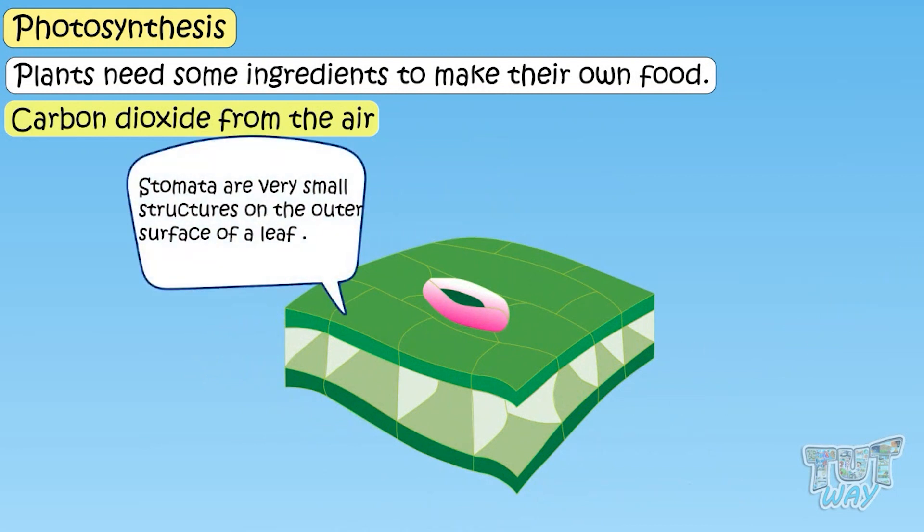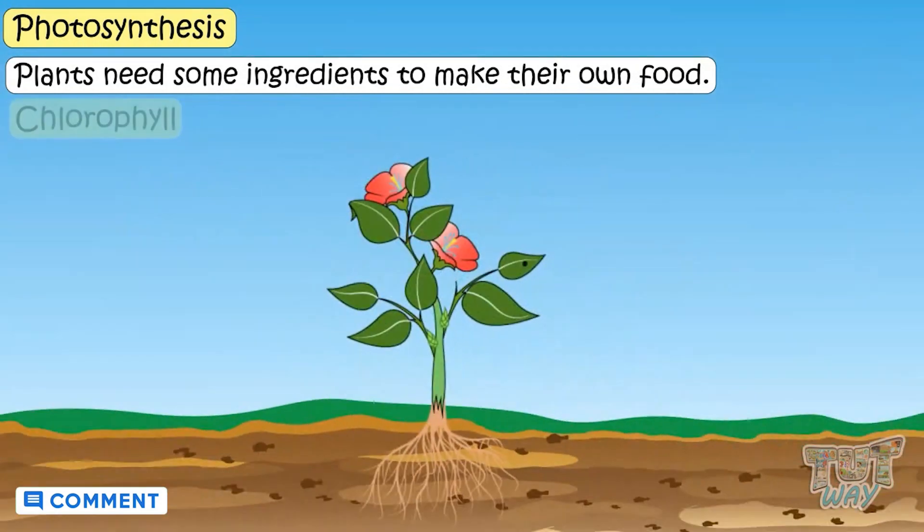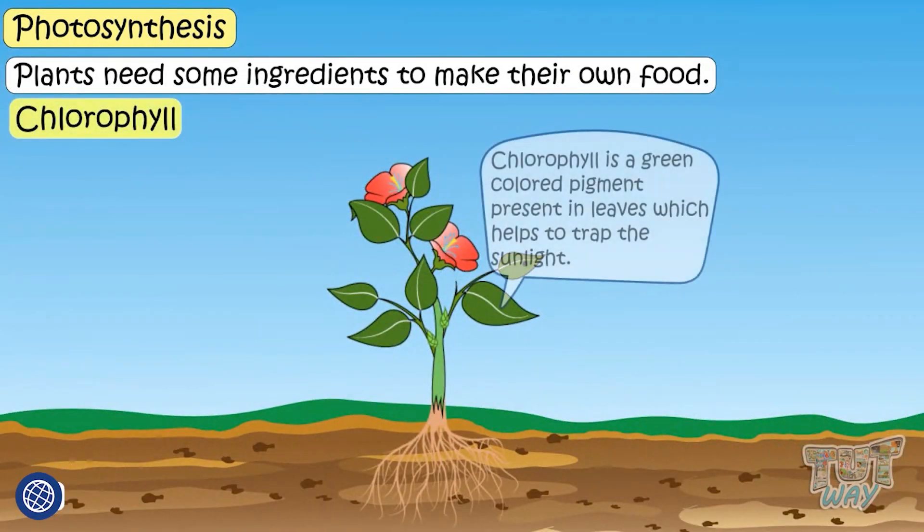Stomata are very small structures on the outer surface of a leaf. They consist of two specialized cells called guard cells that surround a tiny pore called a stoma. Next ingredient is the chlorophyll. It is a green pigment which is present in the leaves.